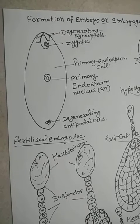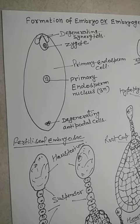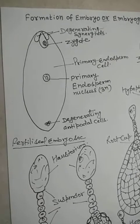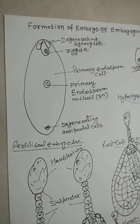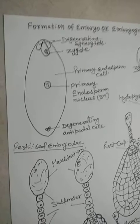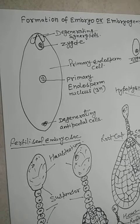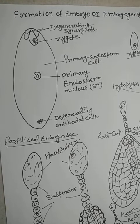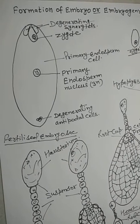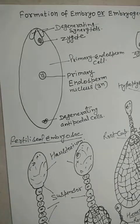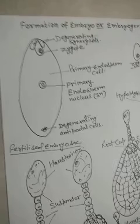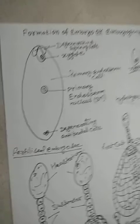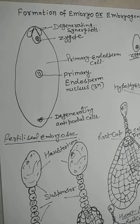Before development of the embryo, endosperm development occurs, because endosperm is the nutritive tissue that provides nutrition for the developing embryo. So endosperm development precedes embryo development — it occurs earlier than the development of embryo from the zygote — because it must provide nutrition for that process.